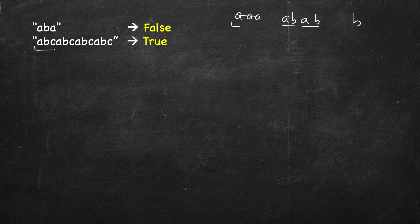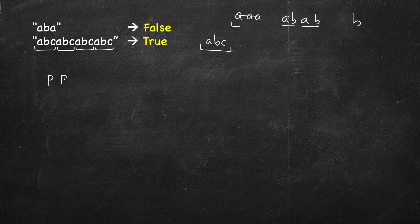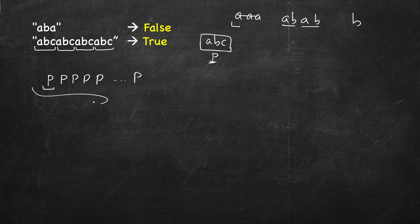If you look at 'abcabcabcabc', you can form this complete string by repeating 'abc' multiple times. So whatever pattern is being repeated, let's denote it with p — the string is like p p p p multiple times. You have to figure out whether the given string is of this form or not.